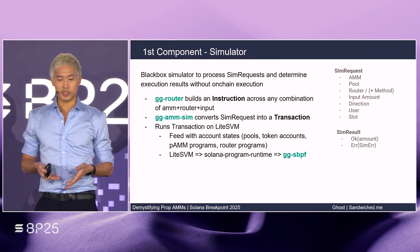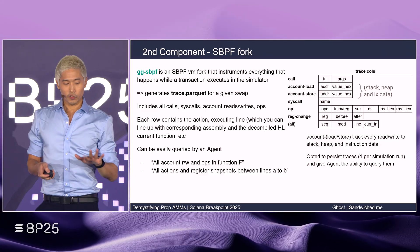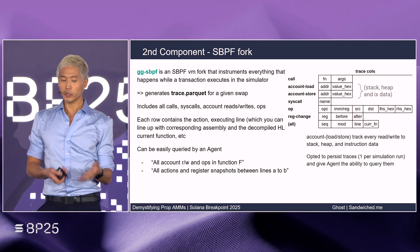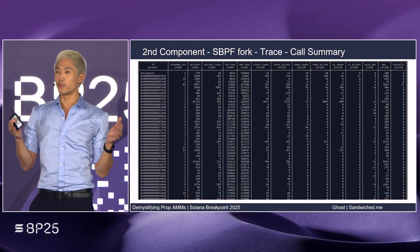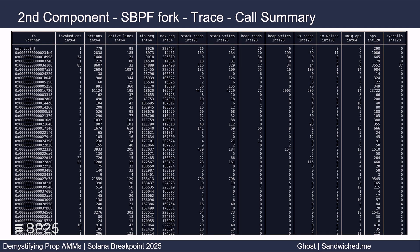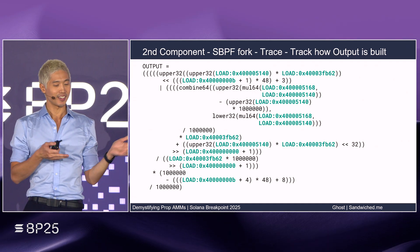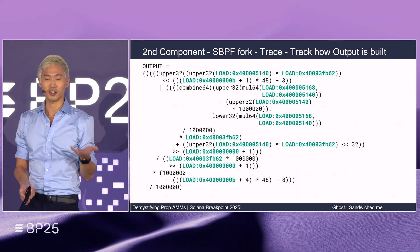Everything is based on an accurate simulator. You need to be able to answer: what would this user get, given the state and this input amount? Ghost SBPF is a fork where we instrument the VM so that every meaningful action — such as function call, return, account read/write operations — outputs a trace packet file. From the trace, we can rebuild a code summary. Here we see a summary of a Tessera V swap, showing which functions were invoked and how often, as well as how many times each function reads and writes to the stack, the heap, and account data. It's a nice bird's-eye view. With just the trace, we can follow the output backward and figure out how it was built up — often a great starting point to see how obfuscated a program is or isn't.